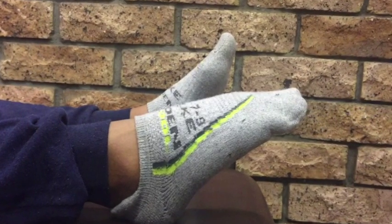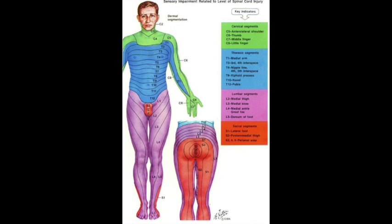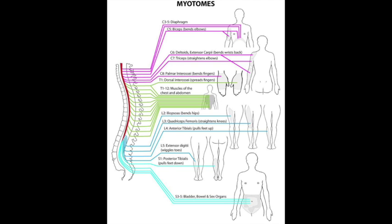Now determine the motor level. Step 3: Determine the neurological level of injury. This refers to the most caudal segment of the cord with intact sensation and anti-gravity — that is, 3 or more muscle function strength — provided that there is normal intact sensory and motor function respectively.